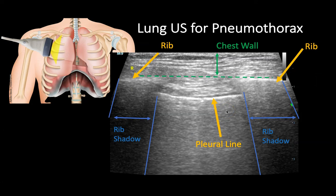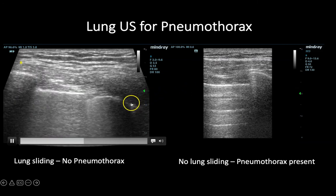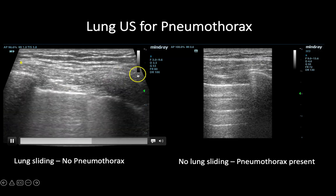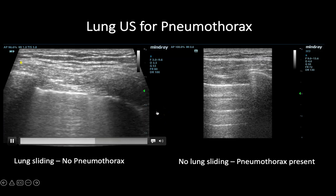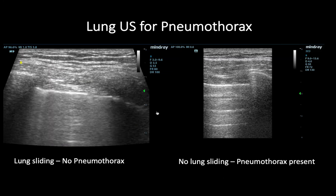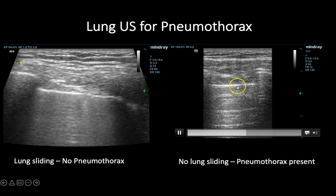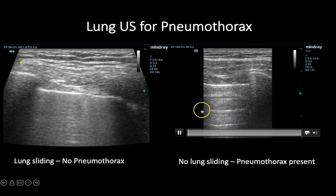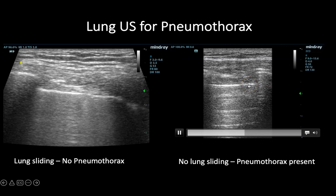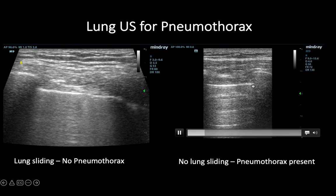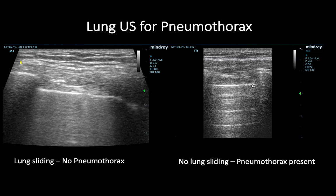The final scan in the HI-MAP sequence is a pulmonary scan for pneumothorax. We obtain an image of the pleural line between two ribs, just deep to the superficial structures of the chest wall. A normal clip shows the pleural line sliding back and forth, which is indicative of no pneumothorax. In the comparison clip, the pleural line is not moving at all, which is consistent with absent lung sliding and suggests a pneumothorax may be present.